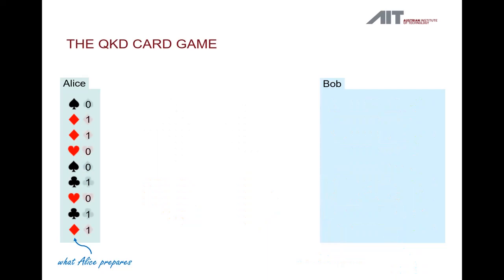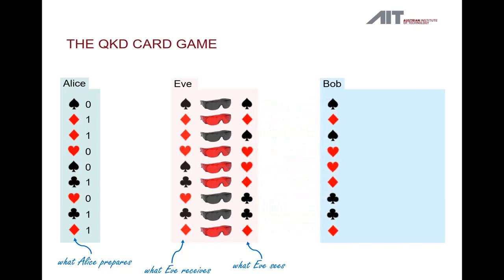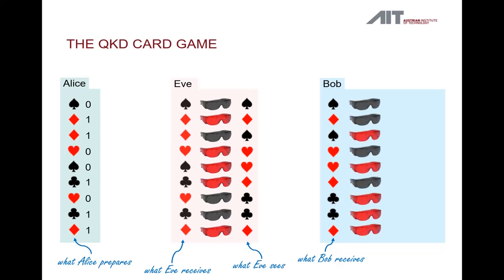But what happens when Alice's deck of cards is intercepted by a malicious spy — Eve? Well, Eve also has to use goggles to identify the card symbols. In 50% of the cases she happens to use the right goggles, but in the other 50% her goggles will have the wrong color for the respective card she wants to see. In order to remain unnoticed, Eve will prepare a second deck of cards according to the symbols that she saw, and send it to Bob. As before, Bob will look at the cards using different goggles.